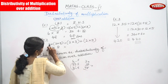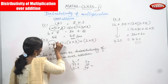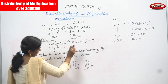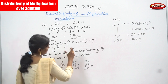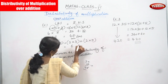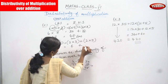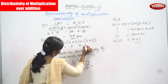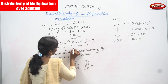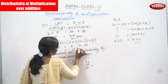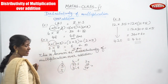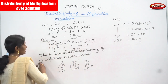Now take the first and second number in one bracket, and the first and third number in a separate bracket: 2 into 3 equals 6, plus 2 into 5 equals 10. Add them together and you get 16. So the left hand side equals the right hand side — both are the same.